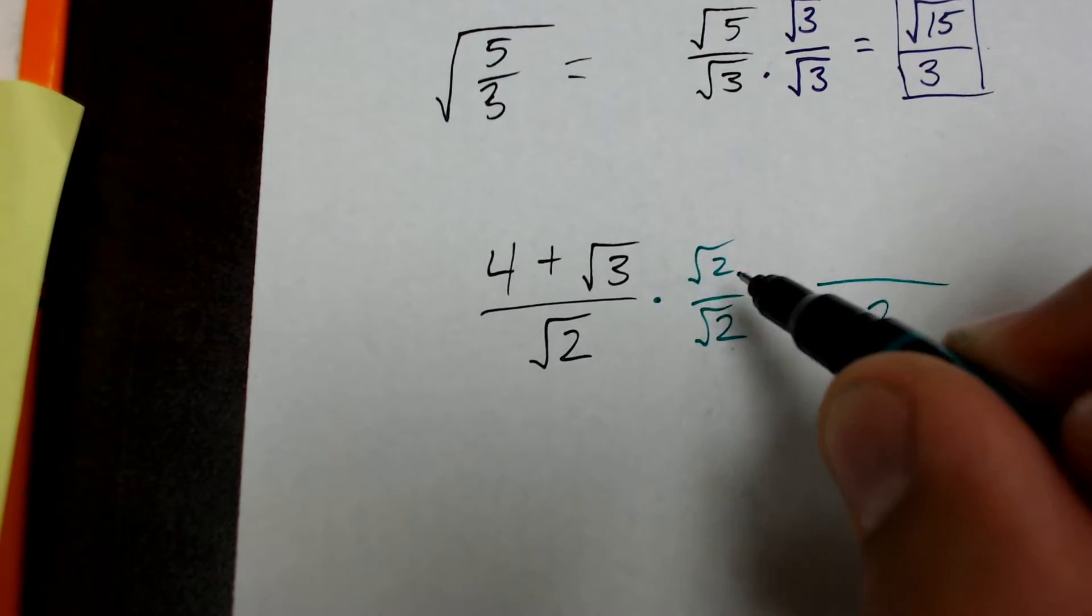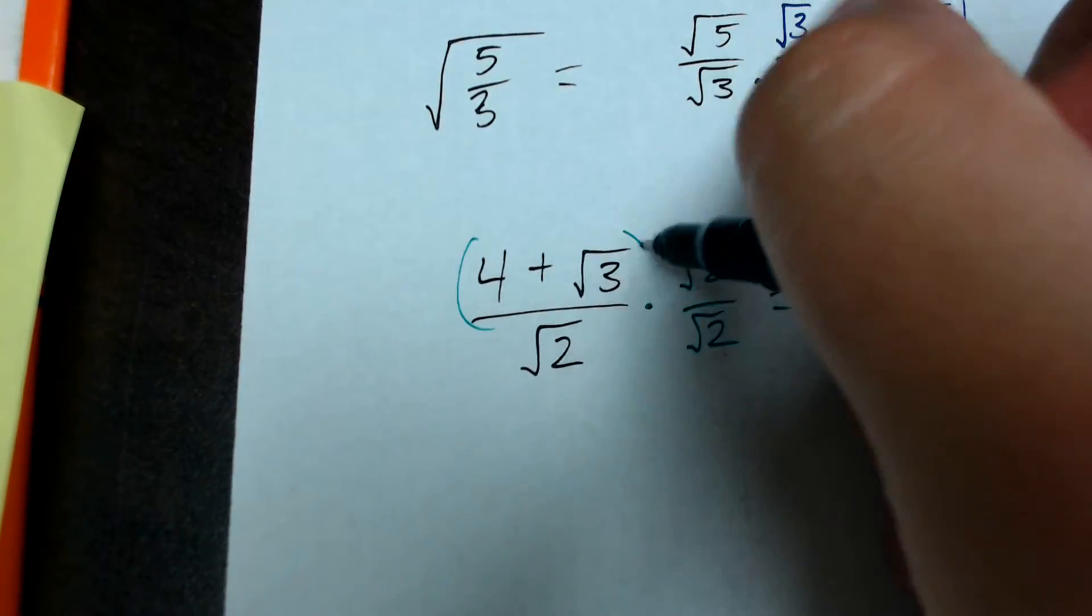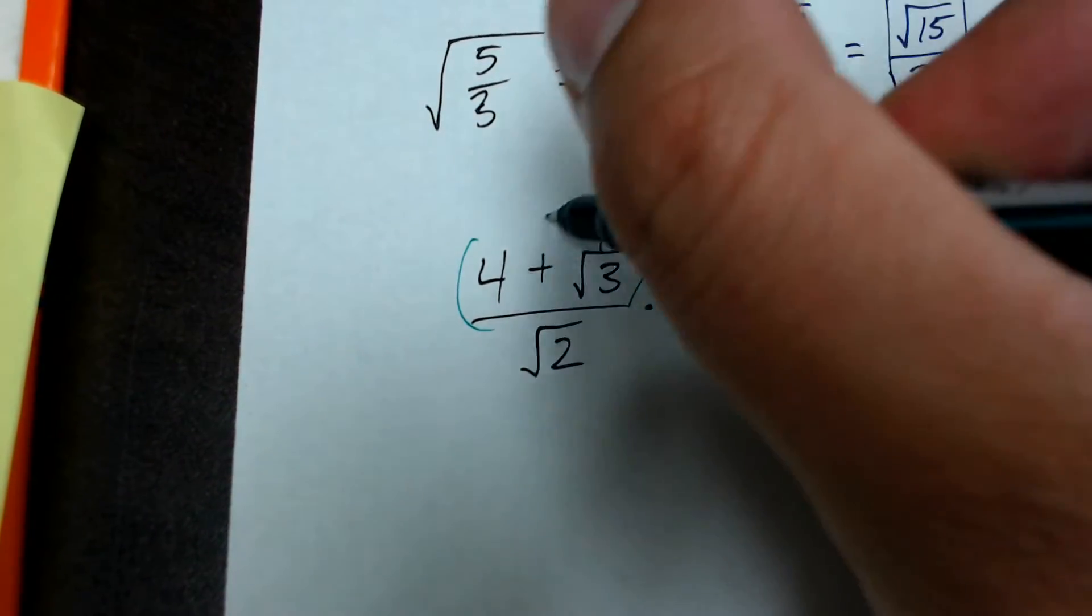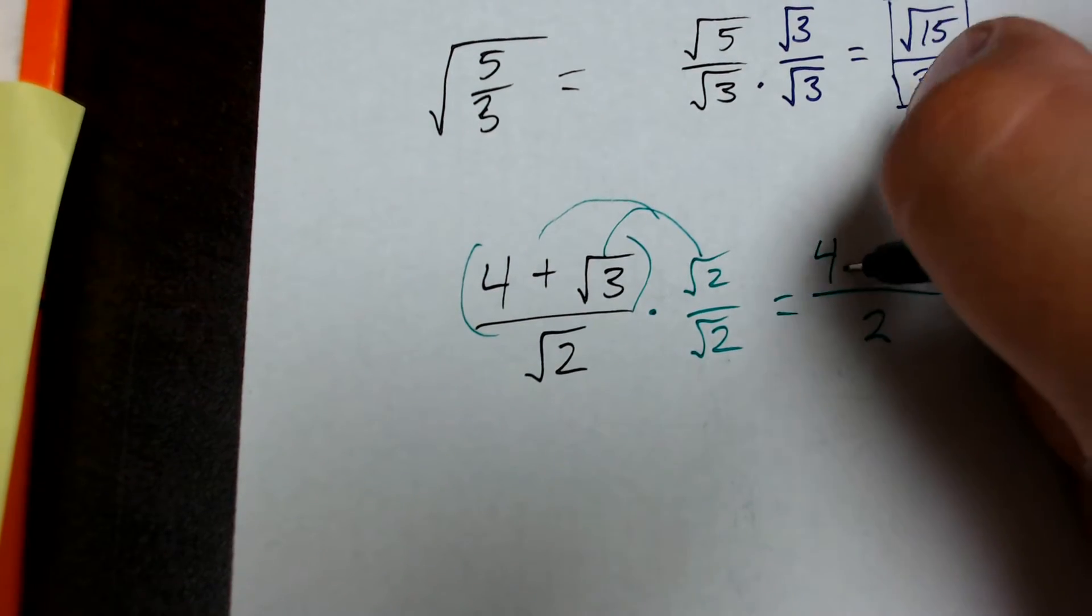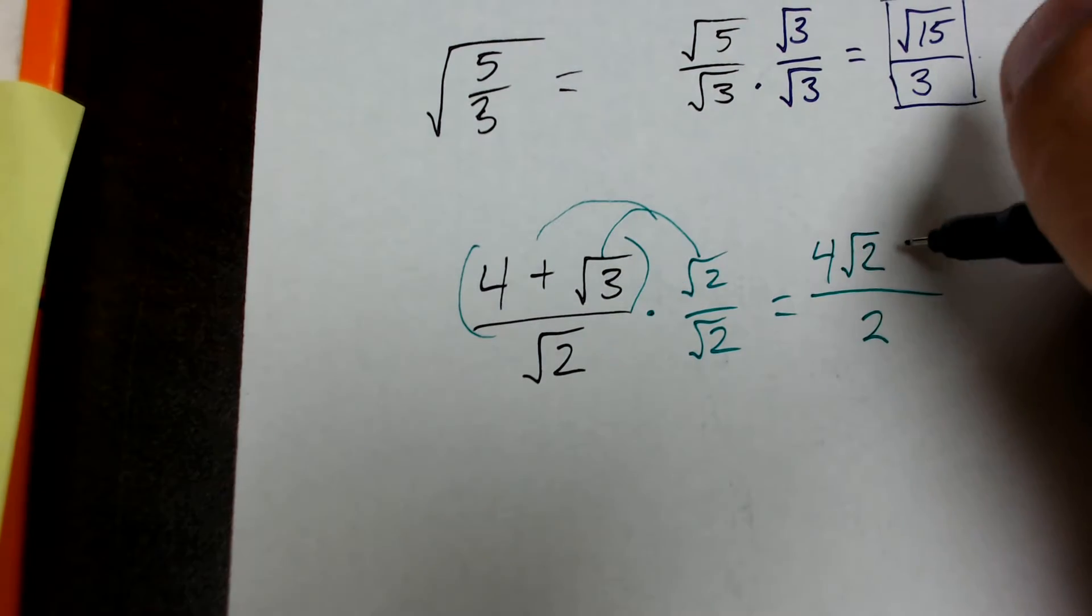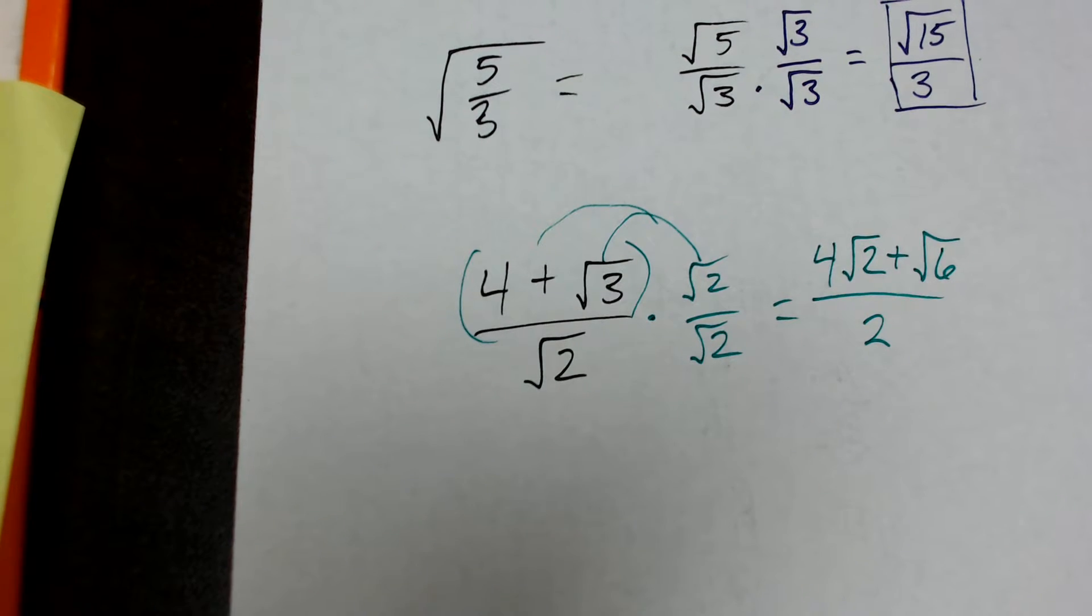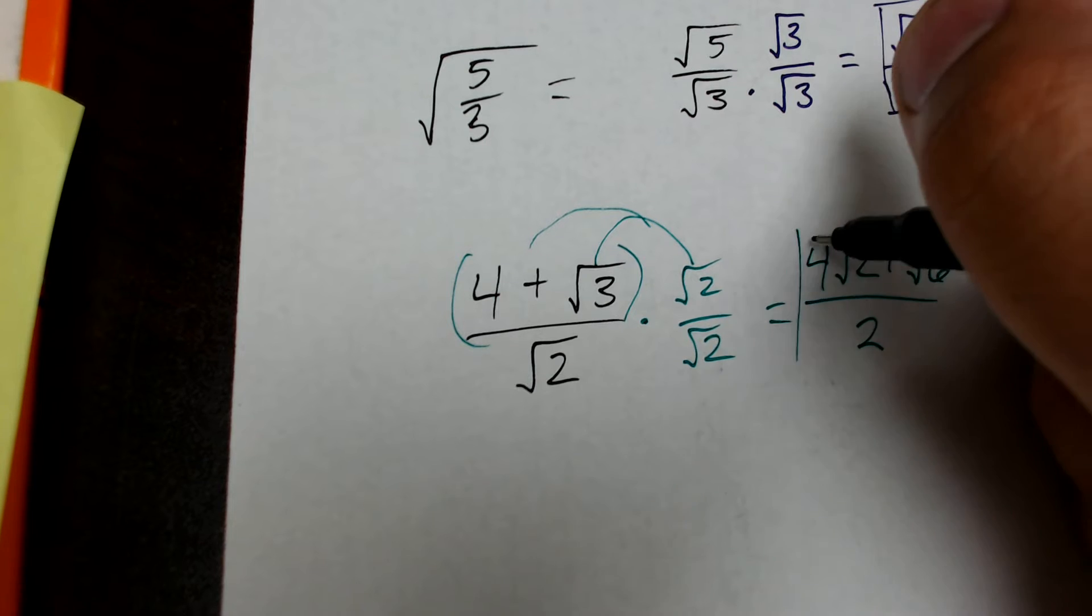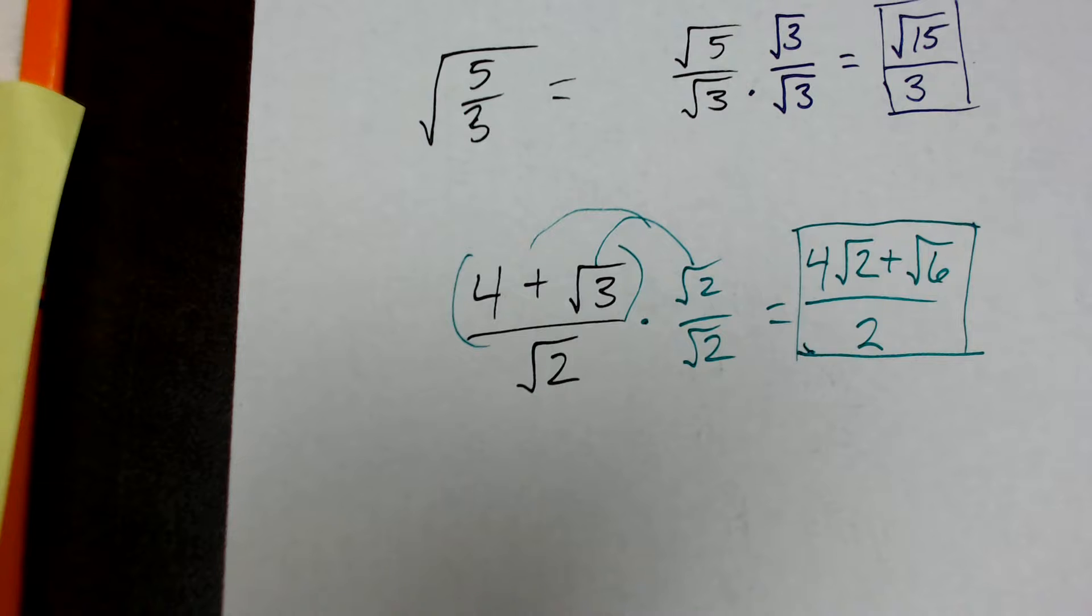And then, in this numerator over here, what I have to do since there's a plus or a minus sign here, and this is a polynomial, is I have to distribute the square root of 2. So, 4 times square root of 2 equals 4 root 2. Root 3 times the square root of 2 equals the square root of 6. So, I have 4 root 2 plus the square root of 6. And, that is as simple as they want you guys to make it right now. And, that would be your final answer. So, this is pretty simple stuff. It's not too difficult.